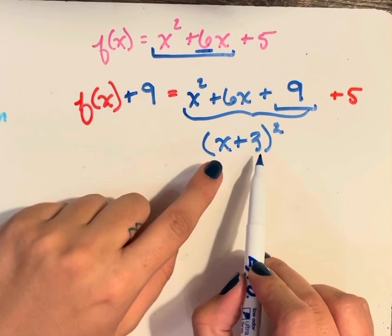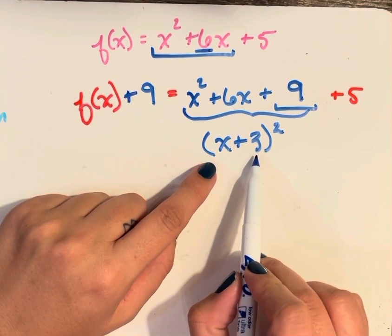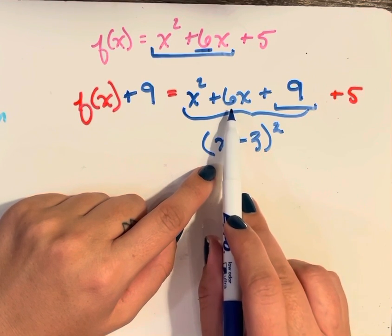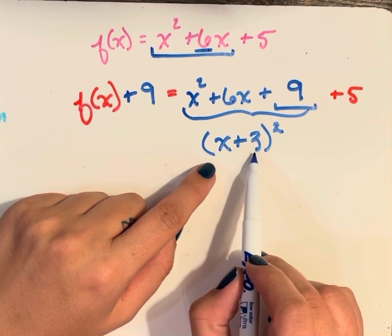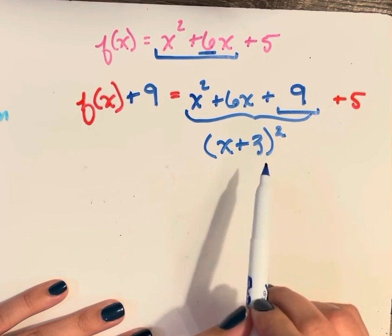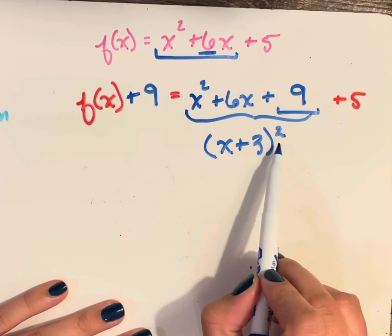The x plus 3, the 3 comes from the magic number. And again, 3 squared gives us 9. 3 times 2 gives us 6. So that's how I know 3 is the number that's going to go in here. And I created this trinomial by adding the plus 9 so that it would factor really nicely like this.